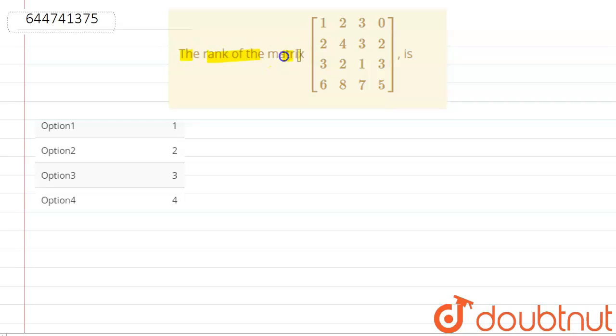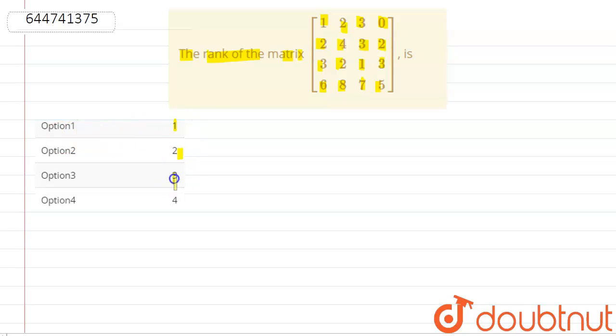Hello friends. Here the question is: find the rank of the matrix. The matrix given is: [1, 2, 3, 0; 2, 4, 3, 2; 3, 2, 1, 3; 6, 8, 7, 5]. The options given are 1, 2, 3, 4. We have to find the rank of this matrix.